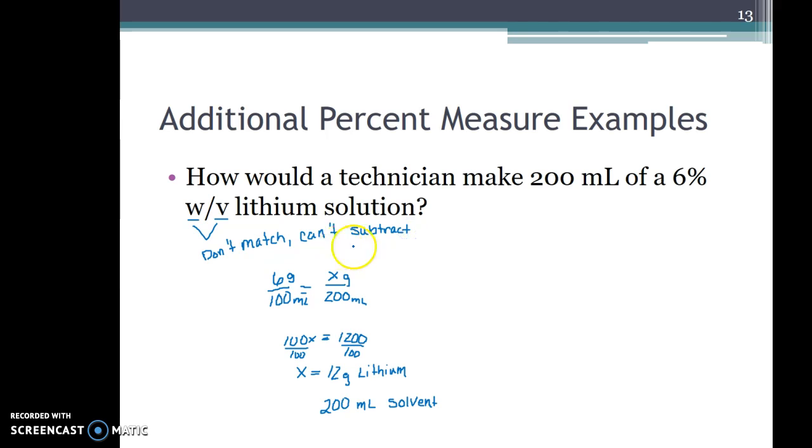When we had a volume to volume solution we could subtract because those labels matched, they were like terms. When we had a weight to weight solution again we could subtract because again they were both in grams that time, they were like terms.